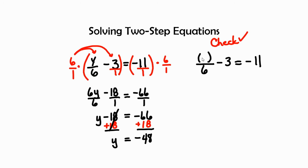When I plug in negative 48, negative 48 divided by 6 is negative 8 minus 3 equals negative 11. Negative 8 and negative 3, we combine those together, gives me negative 11 equals negative 11. And we check.